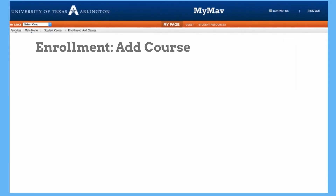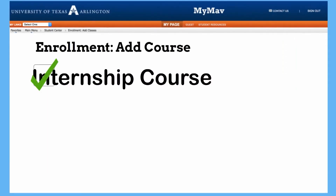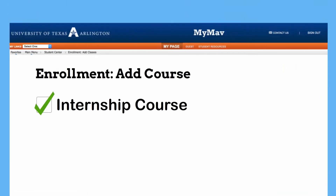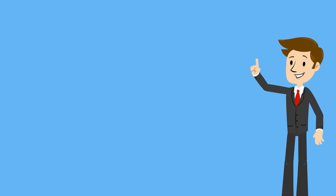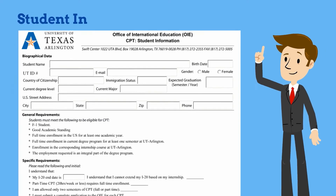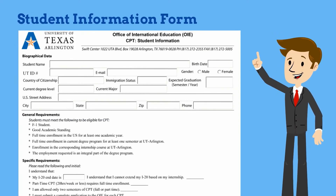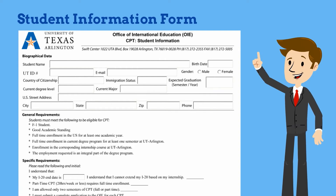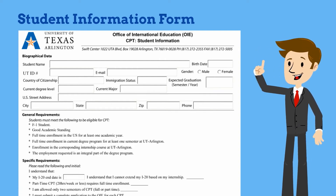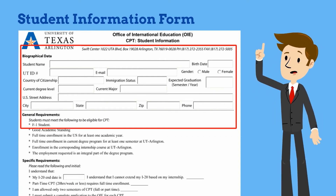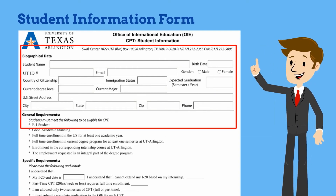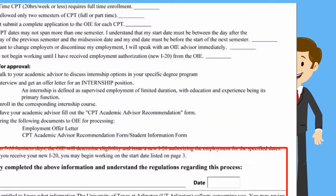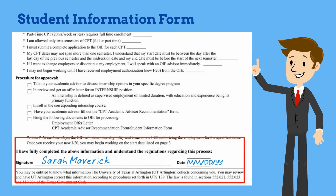Don't forget to register for the internship course before you turn your application into OIE. The second form is the student information form. This form is to remind you of important information about your CPT. Just fill out the top section with your information, then read and initial each item. Finally, sign and date the form.